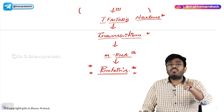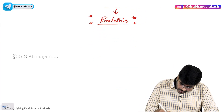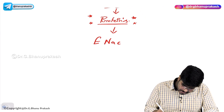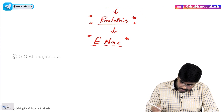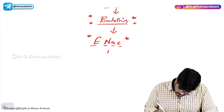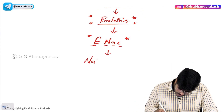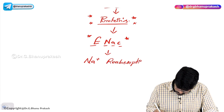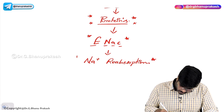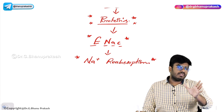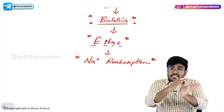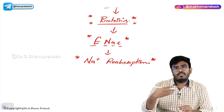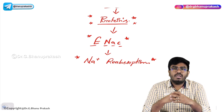The proteins produced are those involved in sodium reabsorption — they are called ENaCs, or Epithelial Sodium Channels. These epithelial sodium channels are the ones responsible for sodium reabsorption. So this is how aldosterone functions — by acting on its cytoplasmic receptor and via activation of transcription.